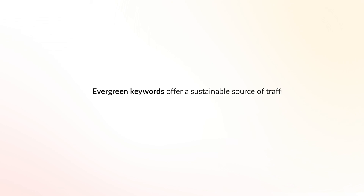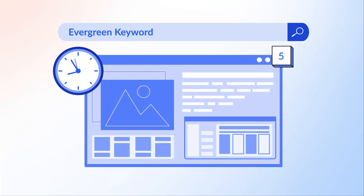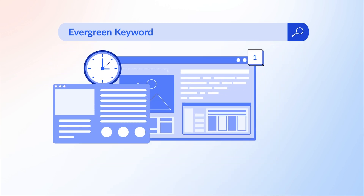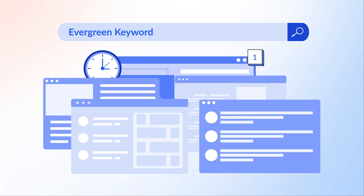On the other hand, if you can produce quality, timely content, your website could just stand out. When it comes to evergreen keywords, these are a sustainable source of traffic, but it takes time for your web pages to rank high for this type of keyword because there's usually plenty of competition from other websites targeting this type of search term. But once your website ranks for evergreen keywords, it makes for a reliable traffic source for the long term.